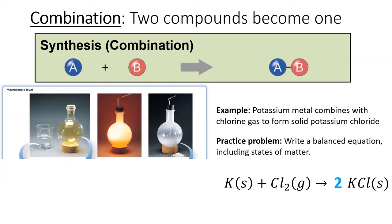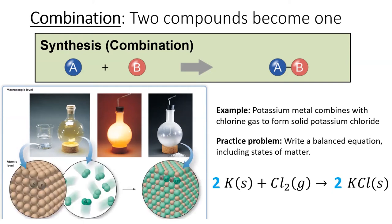I first add a 2 in front of the KCl so that the right side has two chlorine atoms. Then I add a 2 in front of potassium on the left side, and the equation is successfully balanced.